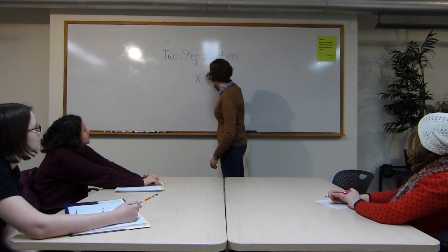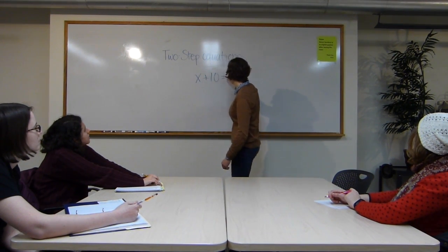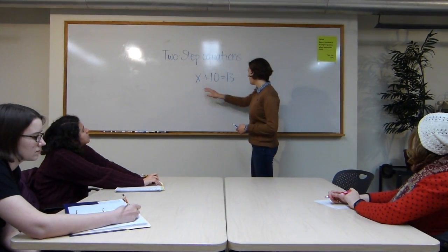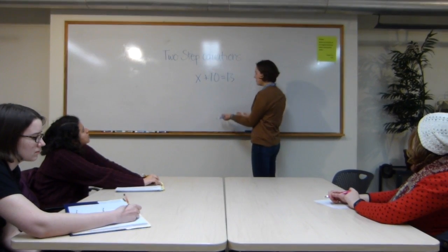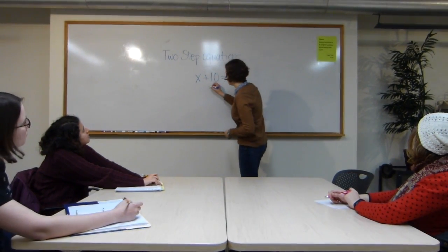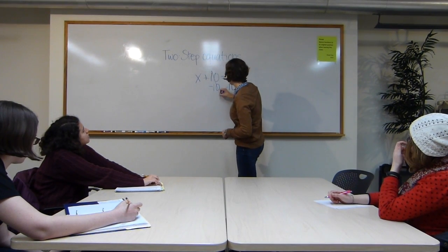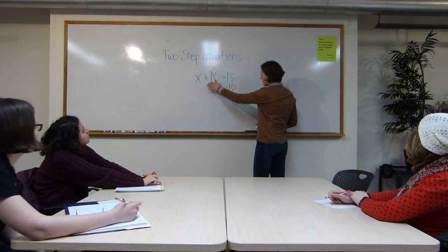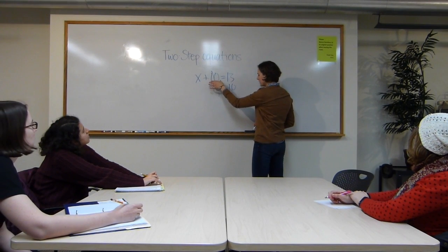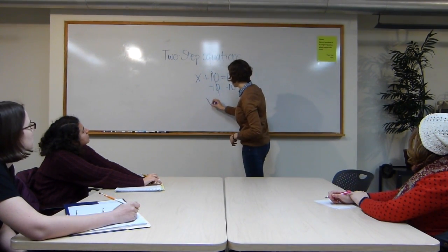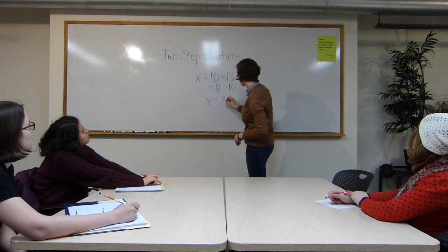Last time we saw problems like x plus 10 is equal to 13. And the way that we get x by itself and immediately can see an answer is by subtracting 10 on each side in this case. And what we're really doing is we're forming the opposite operation to undo the constant on this side of the equation so we can isolate the variable. So here we're left with x is equal to 3.